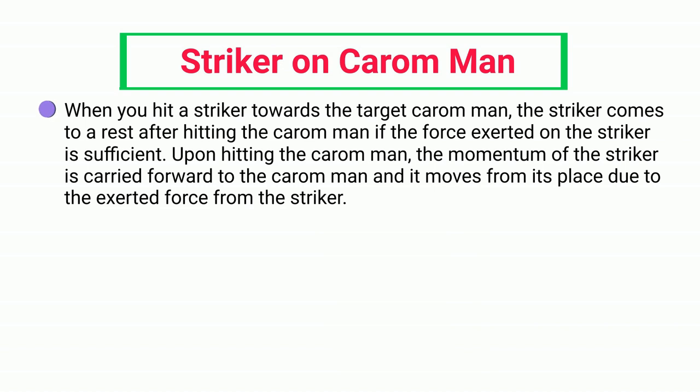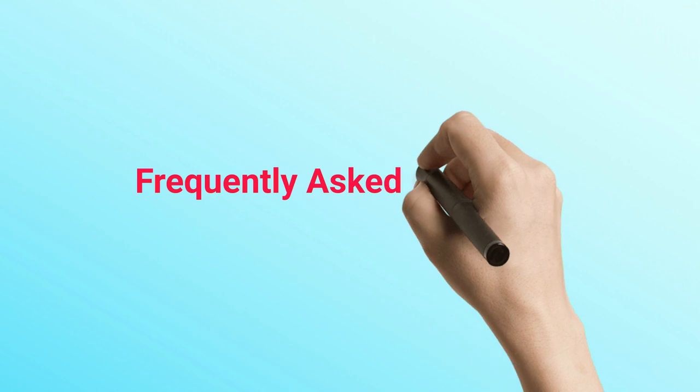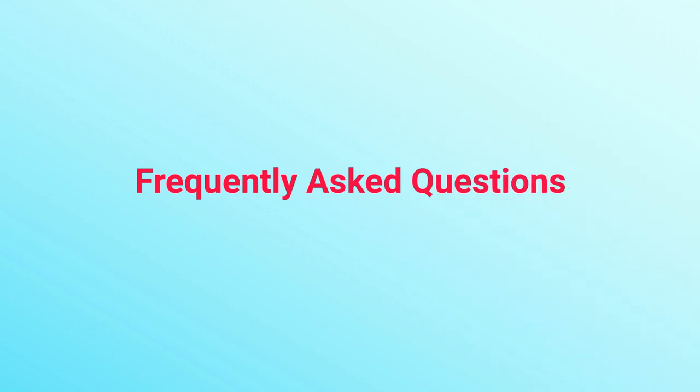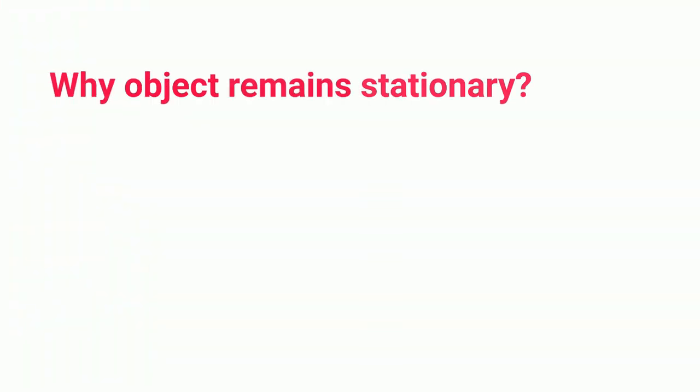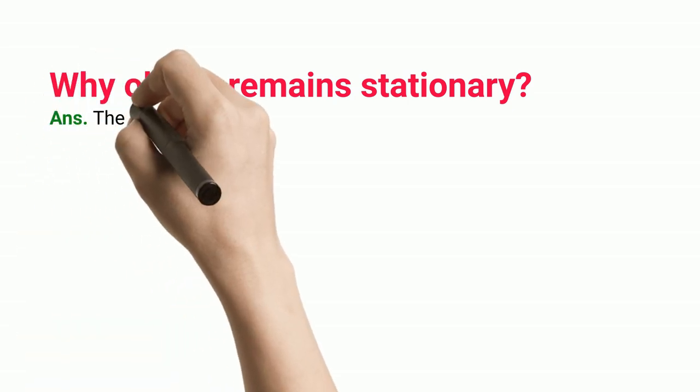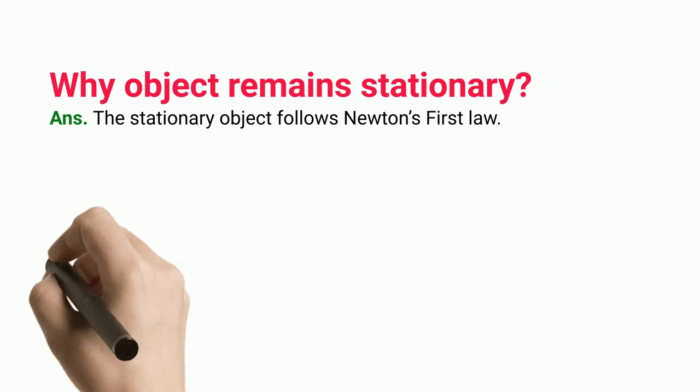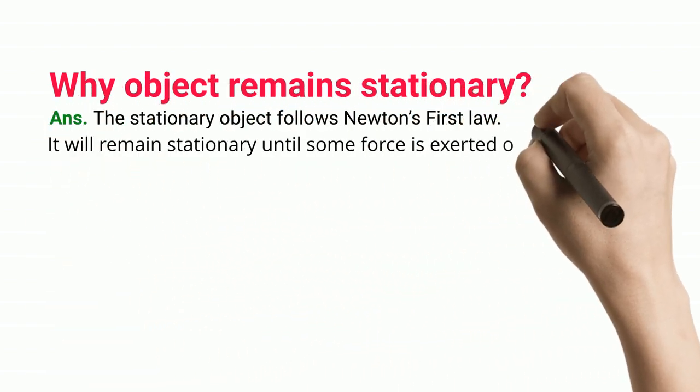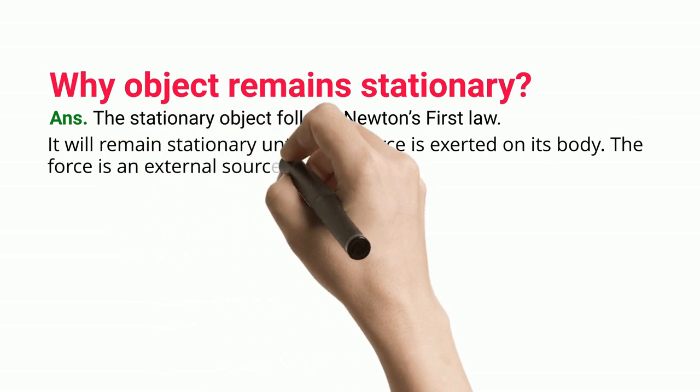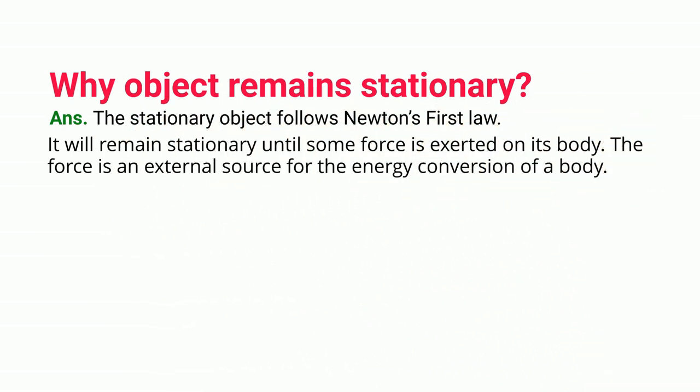Frequently asked questions: Why do objects remain stationary? The stationary object follows Newton's first law. It will remain stationary until some force is exerted on its body. The force is an external source for the energy conversion of a body.